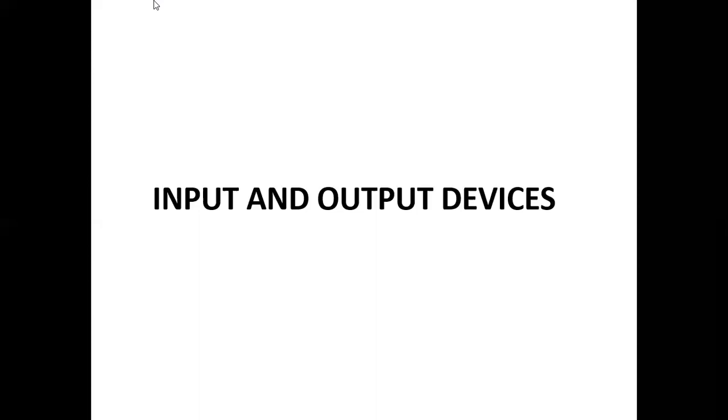The input-output unit contains all the input and output devices of the computer. Output devices include things like the display unit, speakers, and printers. Input devices — such as the keyboard, the touchscreen, the digitizing tablet, and scanners — are those used for capturing input, and they are also part of the input-output unit.